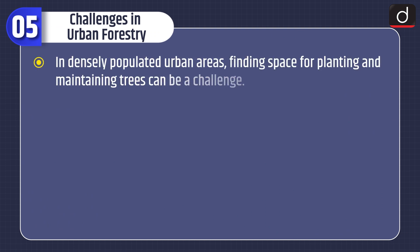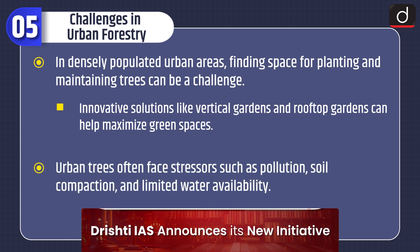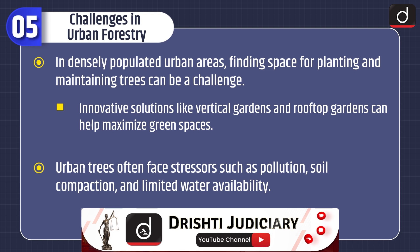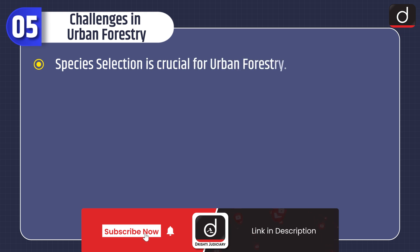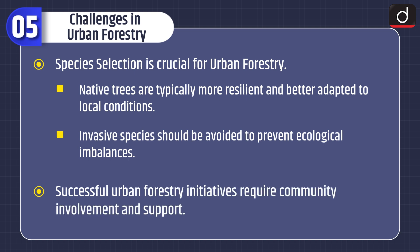Challenges in urban forestry: in densely populated urban areas, finding space for planting and maintaining trees is a challenge. Innovative solutions like vertical gardens and rooftop gardens can help maximize green spaces. Urban trees often face stressors such as pollution, soil compaction, and limited water availability. Species selection is crucial — native trees are typically more resilient and better adapted to local conditions, while invasive species should be avoided to prevent ecological imbalances. Successful urban forestry initiatives also require community involvement and support.